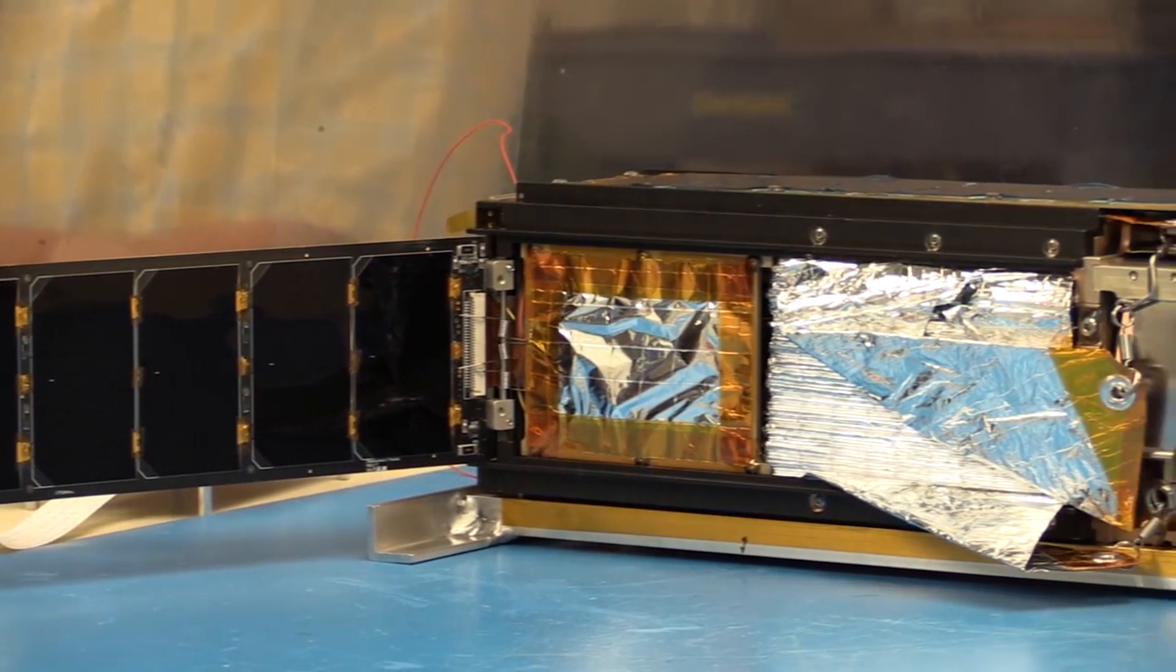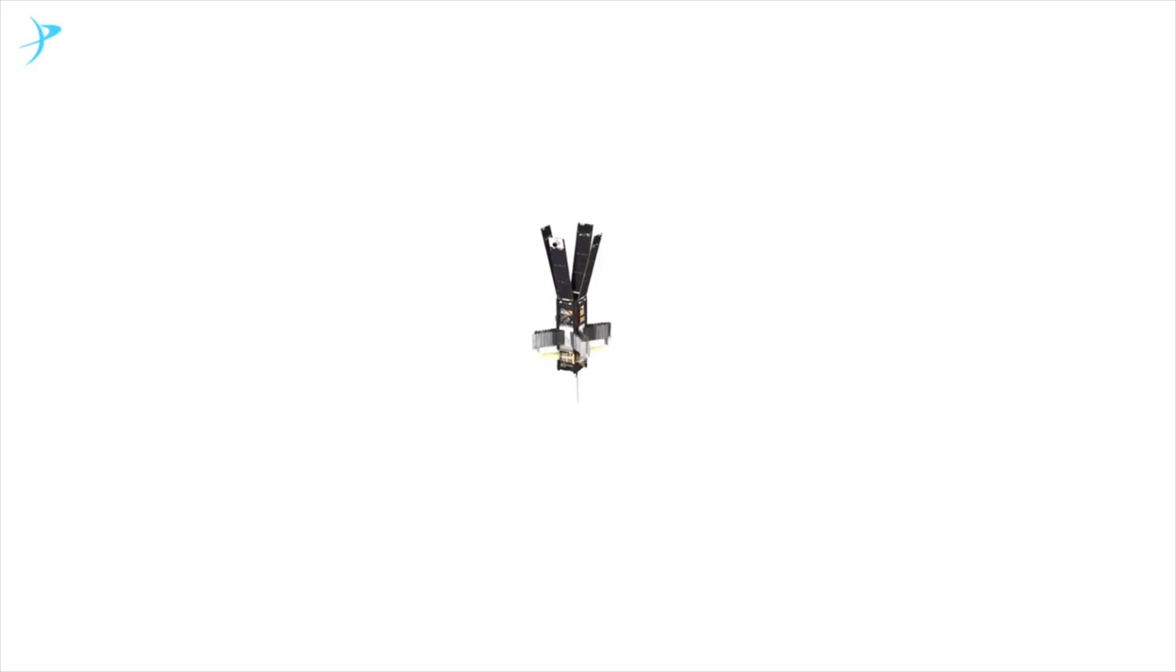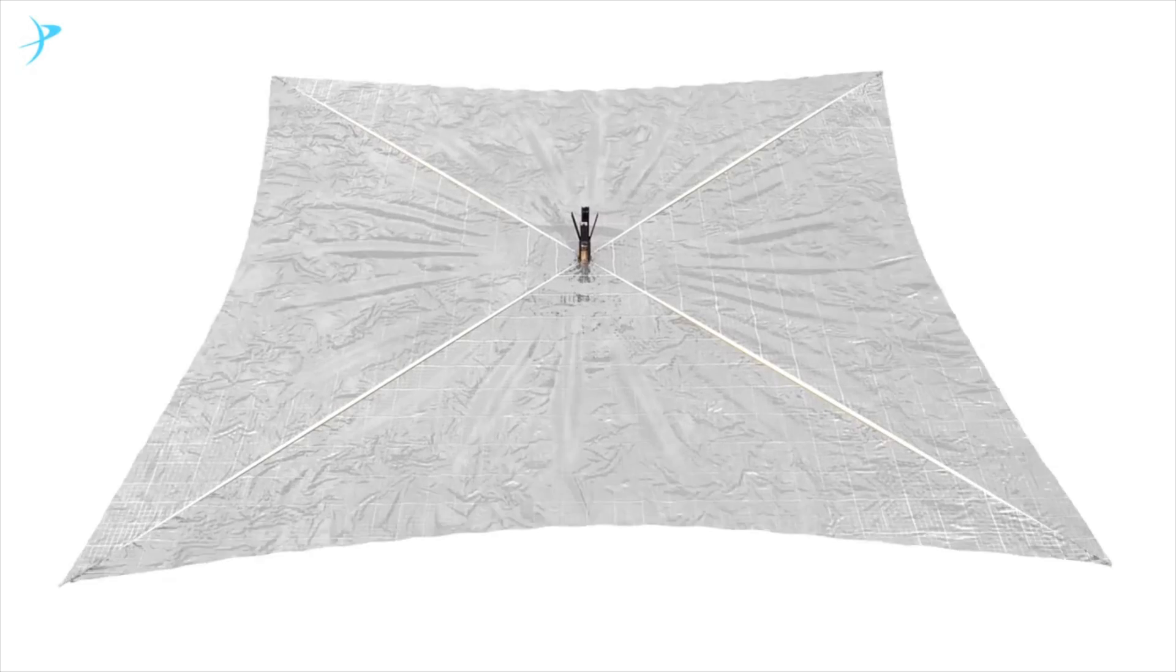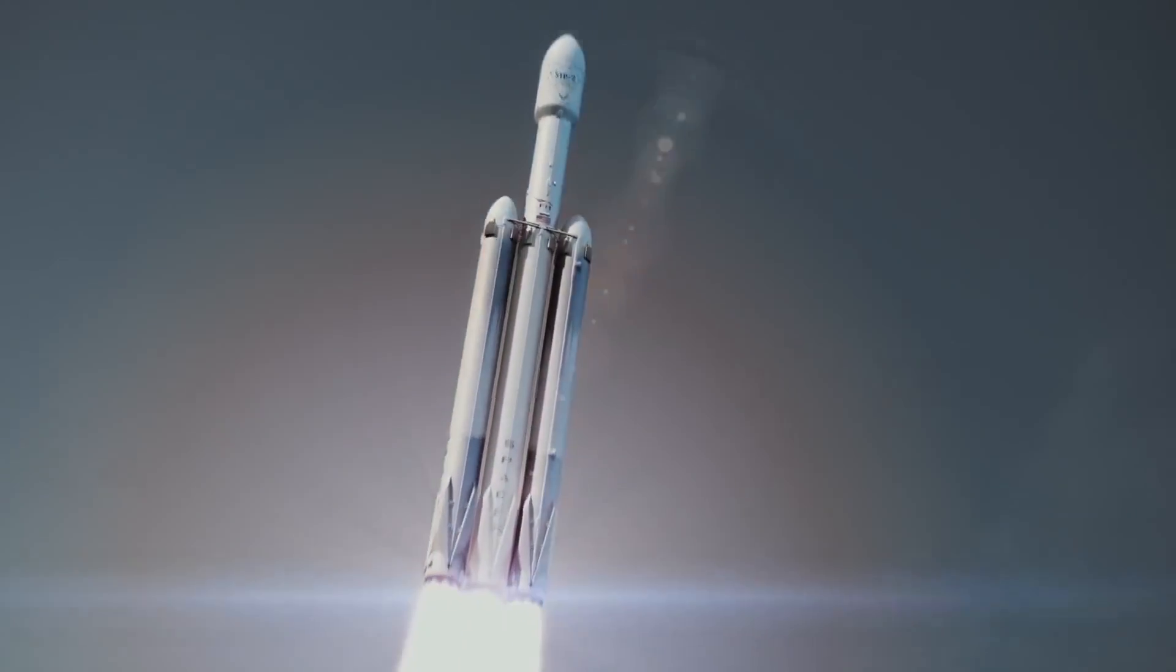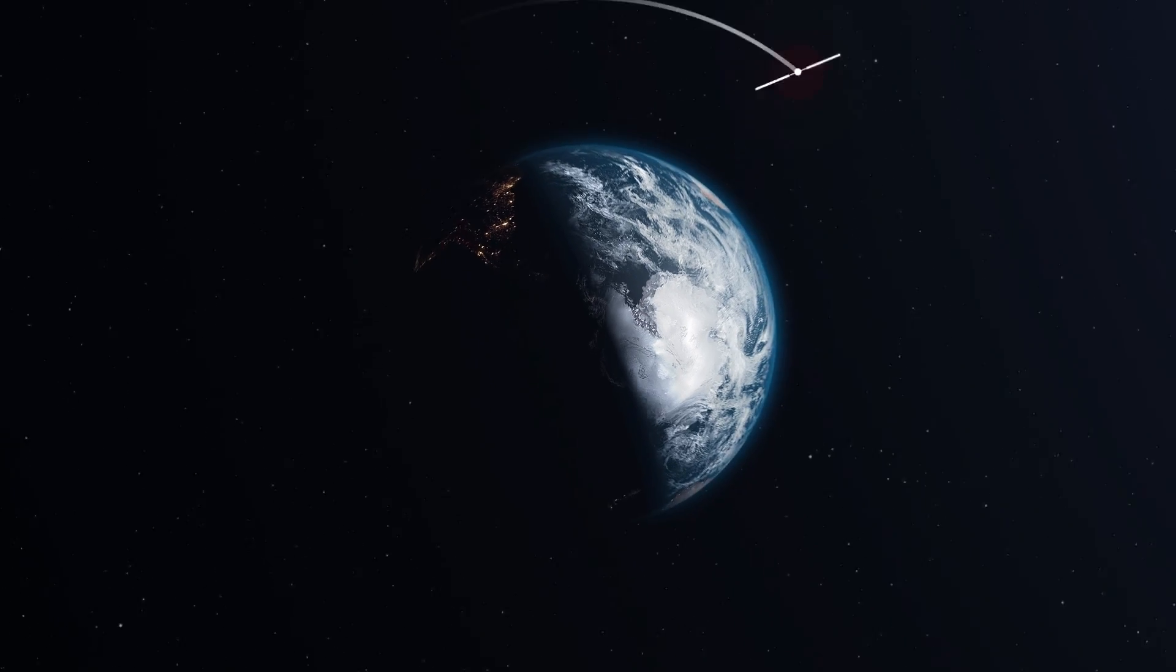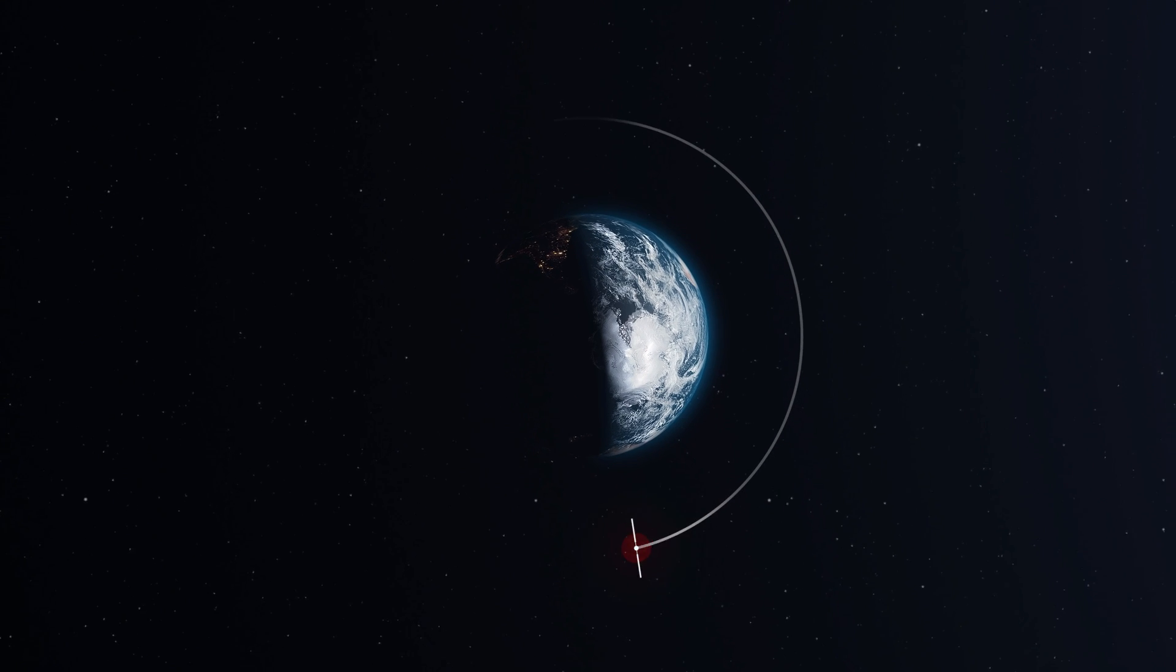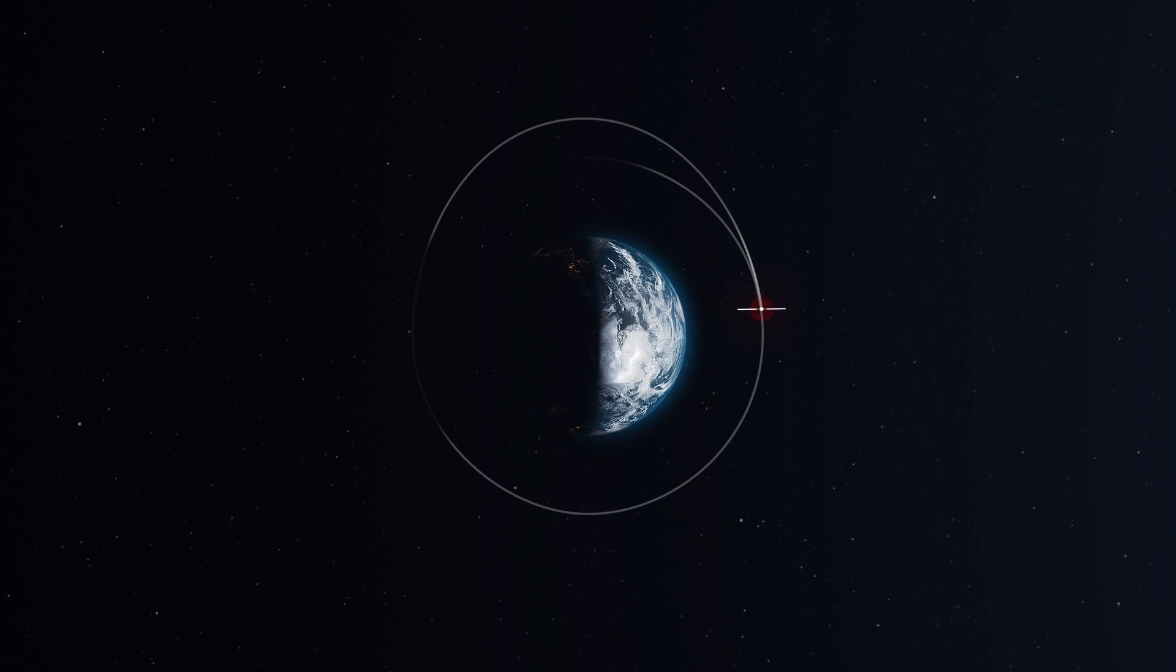LightSail 2 is a tiny craft, weighing just 5 kilograms and 11.3 cm in width and 34 cm long. But when deployed the sails had an area of 32 m². This compact size allowed it to ride share on a Falcon Heavy mission in June 2019, launching into orbit around Earth at 720 kilometers. When LightSail 2 is moving away from the sun it faces its sails towards the sun to maximize the acceleration.